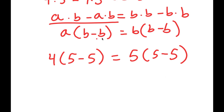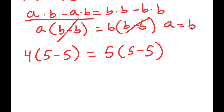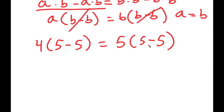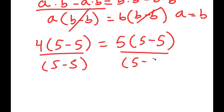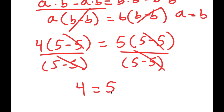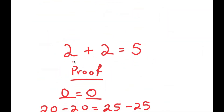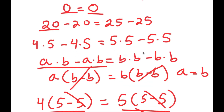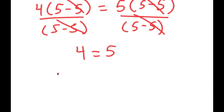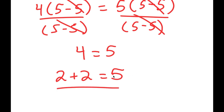Now, if I have a times (b minus b) equals b times (b minus b), I can cancel the (b minus b) on both sides, meaning a equals b. So dividing both sides by (5 minus 5), I cancel those terms and get 4 equals 5. Going back to the original goal — 4 equals 2 plus 2 — so 2 plus 2 equals 5. I just proved that 2 plus 2 equals 5.